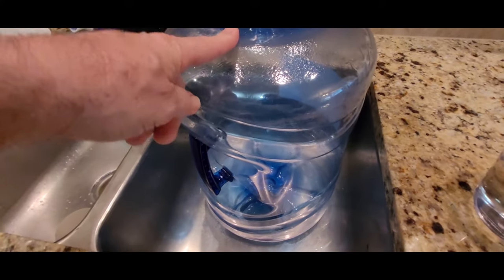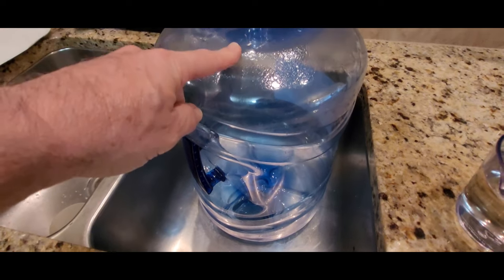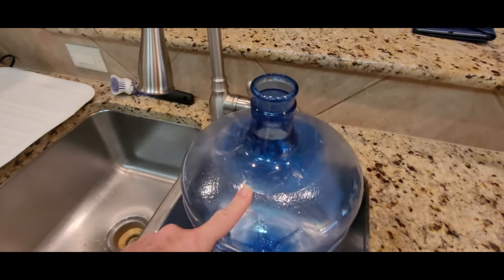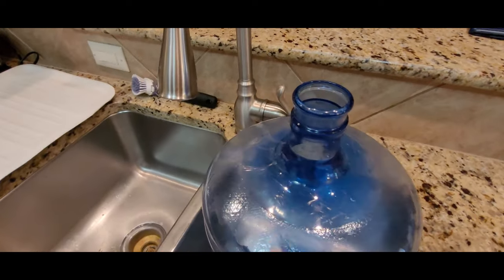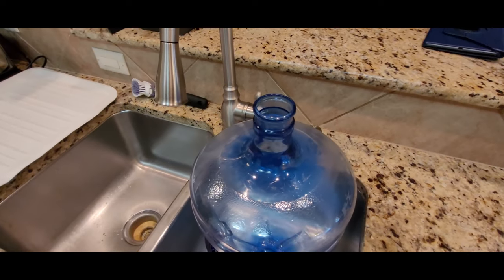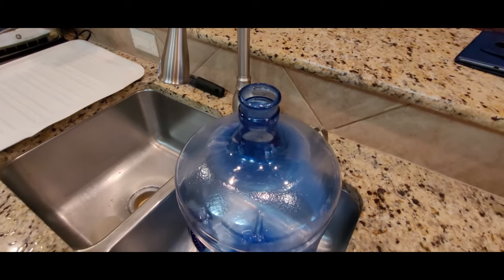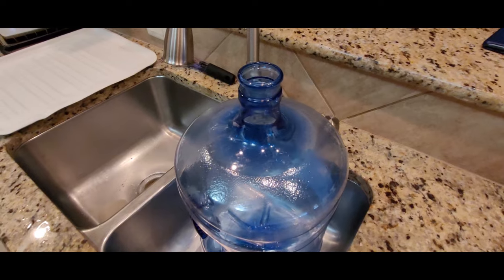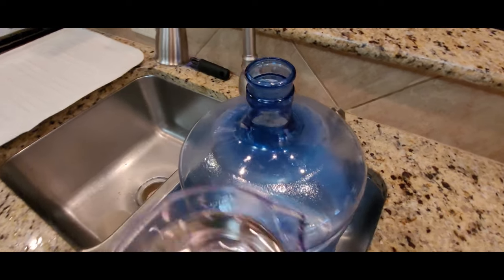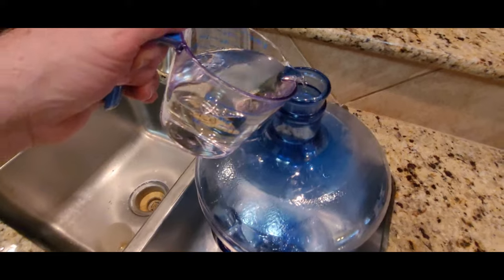We're going to put two gallons of hot tap water into this five gallon bottle and either two tablespoons of bleach or two cups of white vinegar. We only have concentrated bleach, so I'm just going to use the white vinegar.